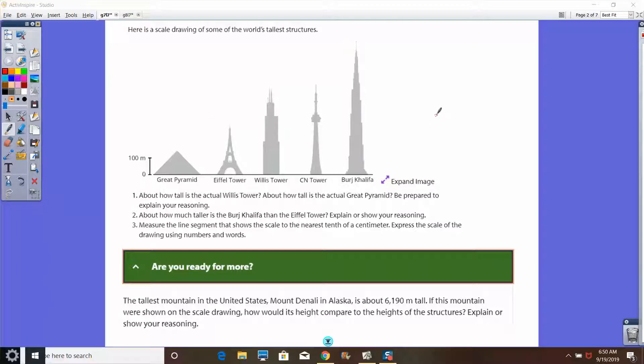You have access to rulers. Rulers are at the front table and you're welcome to take one and use it and make sure you put it back when you're done. You're welcome to use that ruler to help you figure out what these distances are. Make sure you are ready to explain.